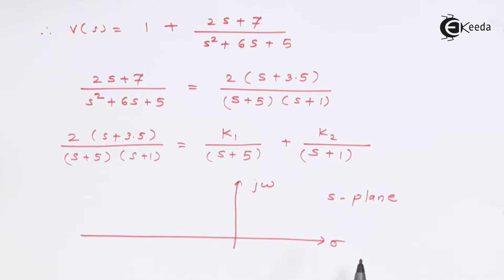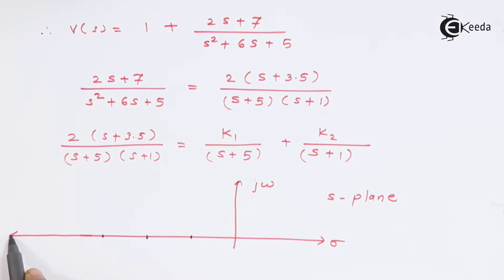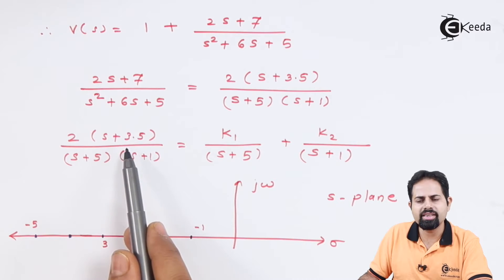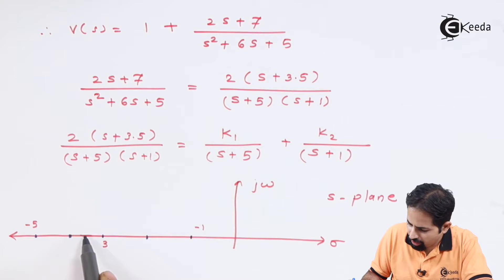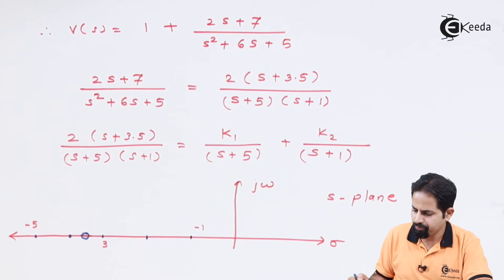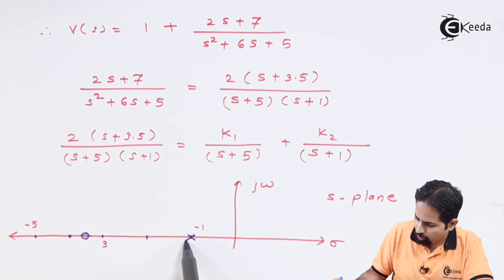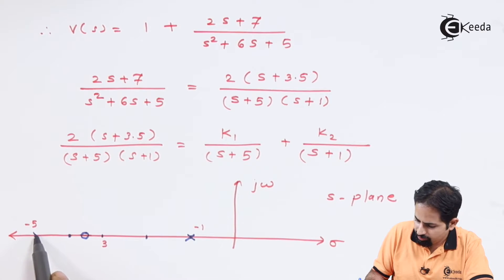This is the s-plane. The first zero is at s equal to minus 3.5, somewhere here. Then there are two poles: one at s equal to minus 1, drawn like this, and one at s equal to minus 5.